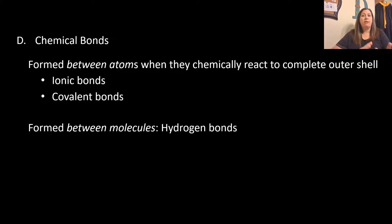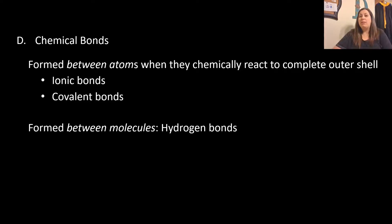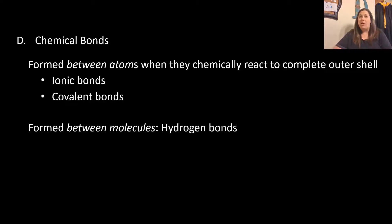Now let's talk about the bonds that atoms can form to create molecules or compounds. Chemical bonds form between atoms when they chemically react to complete their outer shell. There are two main types: ionic bonds and covalent bonds, which happen between atoms. Hydrogen bonds are bonds that happen between molecules — that's an important distinction.